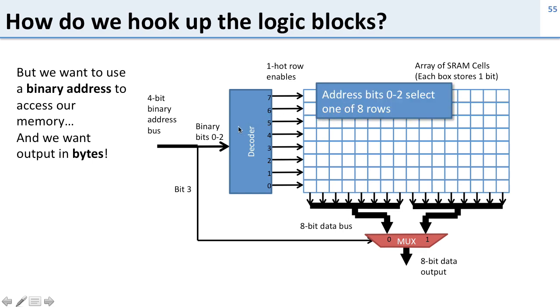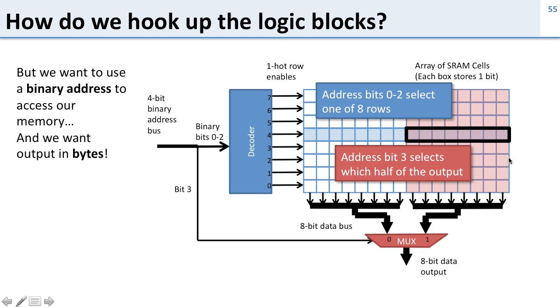So the address bits zero through two are going to select one of the rows. So let's say we select row four and then address bit three is going to select which half of the output. So if address bit three is one we're going to select this half and that means we've read out these eight bits from here. So you can see by having some of the address bits go into the decoder we select the row and then by having some of the address bits go into the MUX down here we select the correct columns.